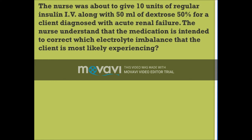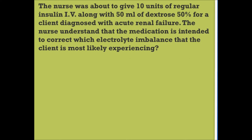10 units of regular insulin IV along with 50 mL of dextrose 50% is ordered for a client diagnosed with acute renal failure. The nurse understands that the medication is intended to correct which electrolyte imbalance that the client is most likely experiencing.